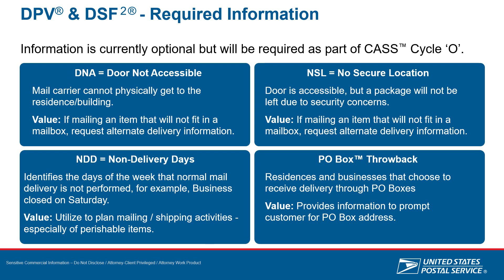This next slide gives more detail about the address information we discussed: door not accessible, no delivery days, no secure location, and throwback. The big change here is that in Cycle N, these were all optional outputs from the software. With Cycle O, they are a requirement. So by default, the output of the software will contain those particular attributes about the address in question.